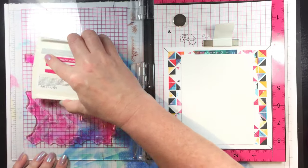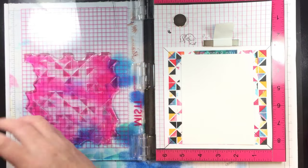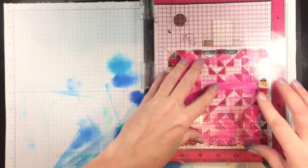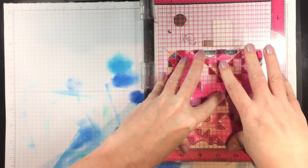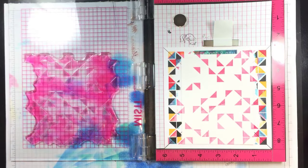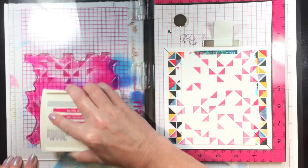So I'm inking up the stamp in Melon Mambo and I will stamp this fun funky geometric image. And then because it's in the MISTI and I can over stamp it I'm going to do that just to make sure it's perfectly inked.